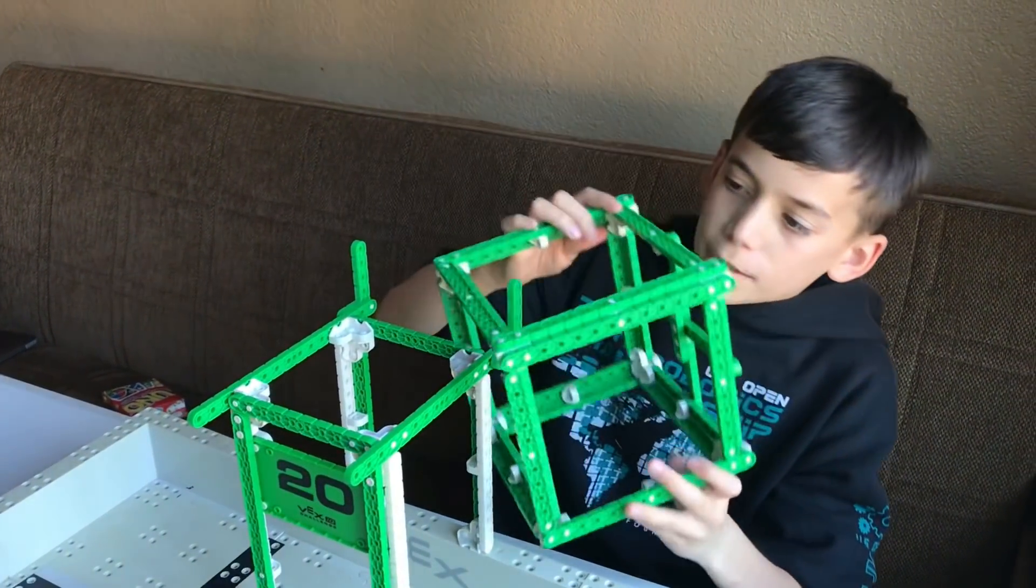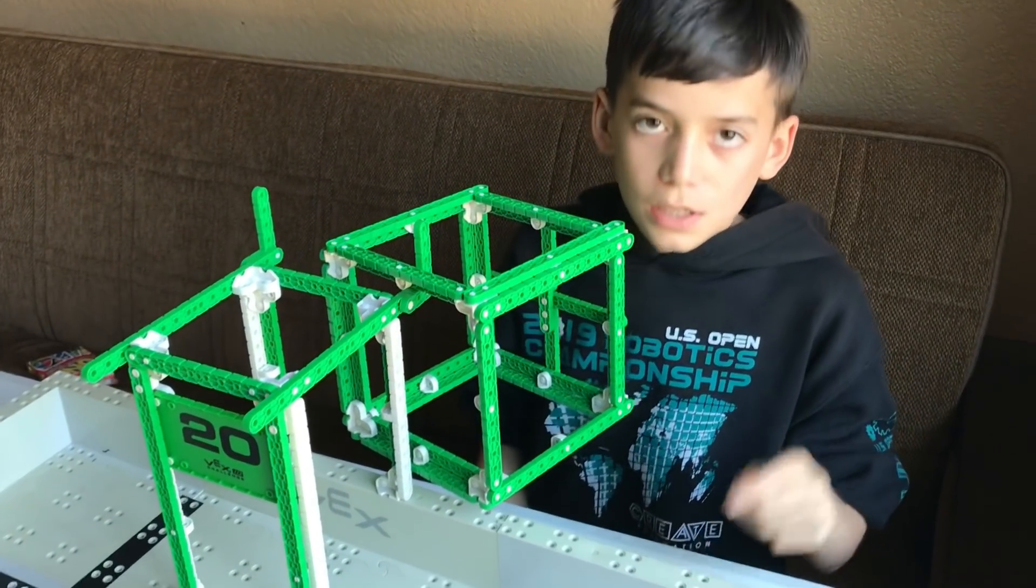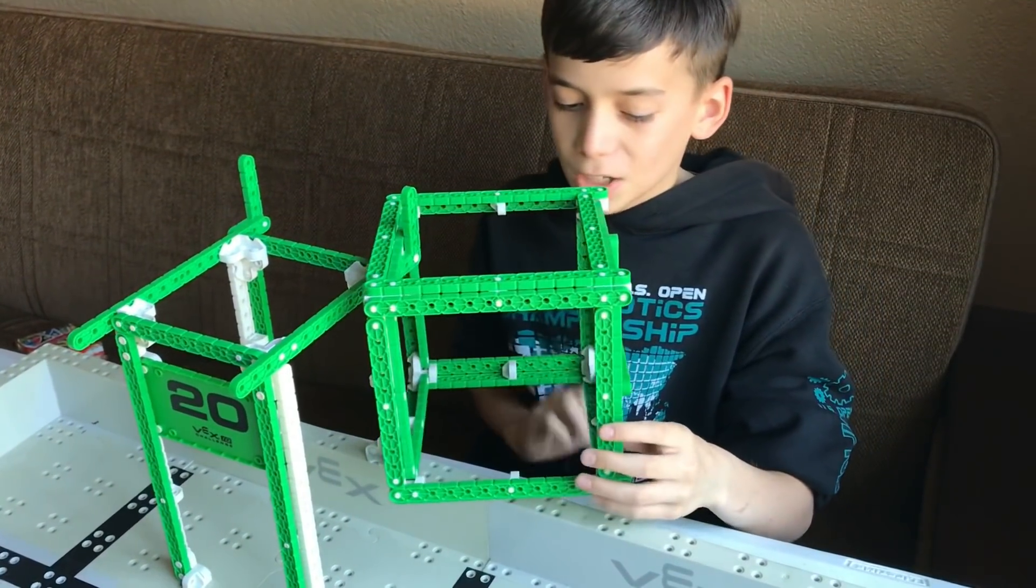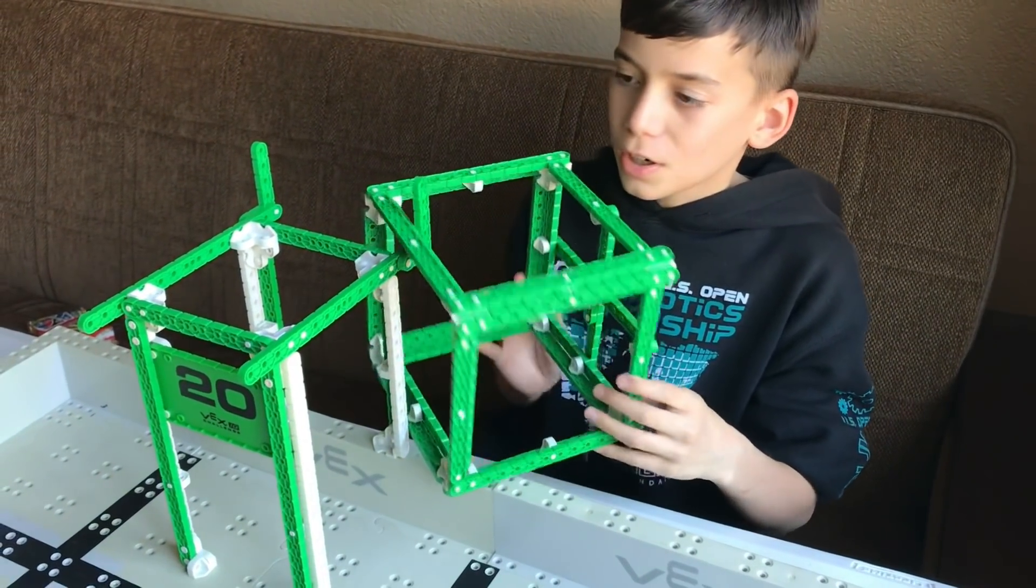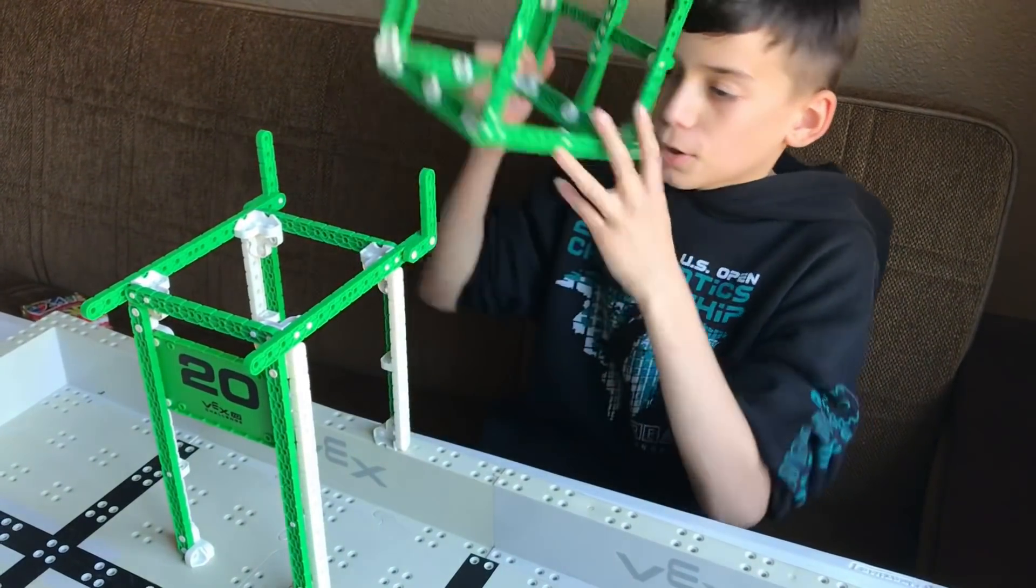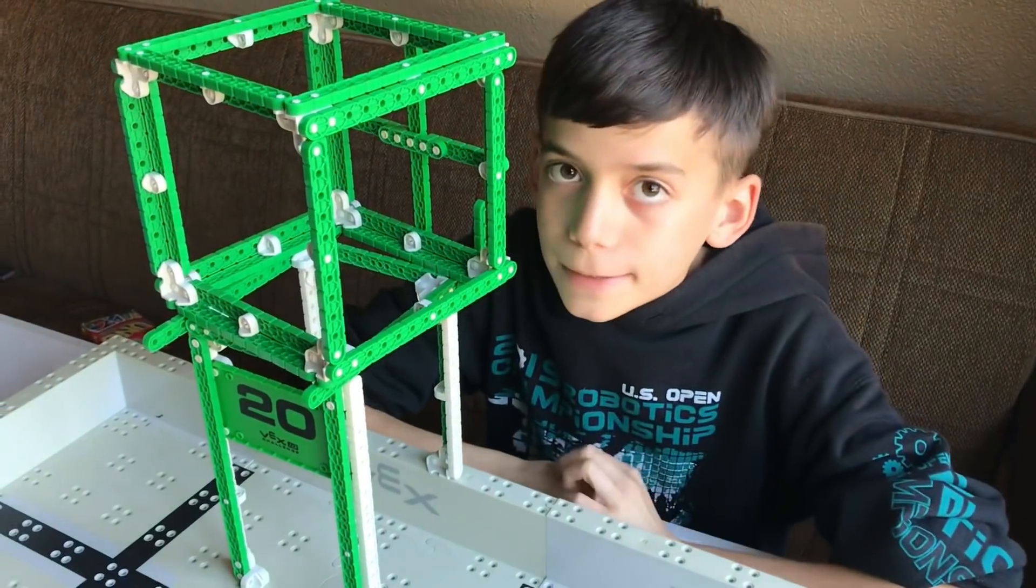There is a thing that if it touches the field perimeter it's zero points. So you can do it however you want but it cannot touch the perimeter. Like if you do it like this, it's touching the perimeter. So this was the scoring for the cube.